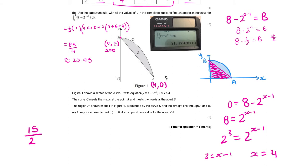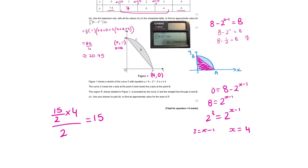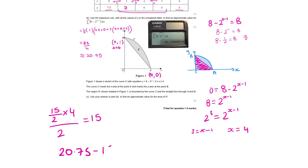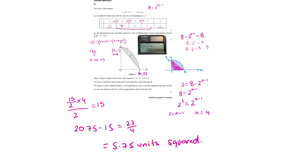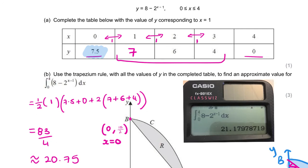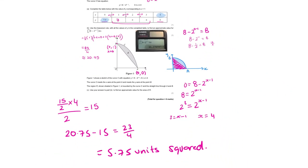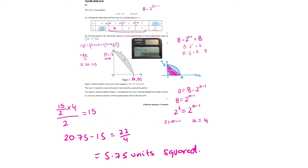So now the area of the triangle: 15 over 2 is my height, my base is 4, divide by 2. The area of the triangle is 15. So 20.75 minus 15 gives me 23 over 4, which equals 5.75 units squared. Actually, in the table, it's already given us the coordinates — (0, 7.5), which is our 15 over 2, and (4, 0). It's already given us A and B. Make sure you read the question carefully. Six mark question.